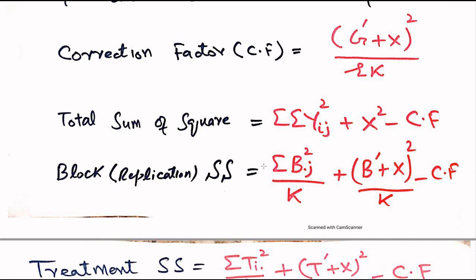The formula for correction factor is g squared over rk. But in this question we have one observation missing, so our grand total is g' plus x which is missing, whole square over rk. Here r is the number of replications and k is the number of treatments. If we multiply r and k, it equals the total number of observations, which is small n.